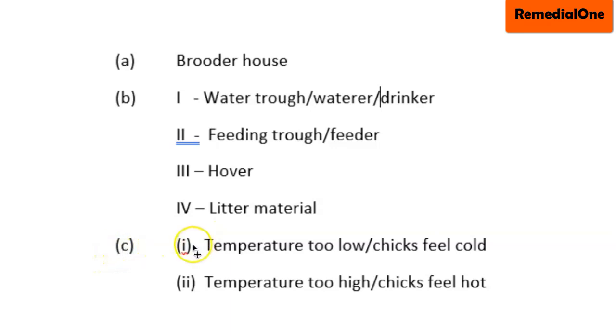Question C: What is the interpretation of the following behaviors of chicks in the housing unit? Part i: Chicks cluster closer to the part labeled III. So whenever the chicks cluster or they move to that part labeled III, the meaning is that the temperature in that brooder house is too low, or the chicks feel cold.